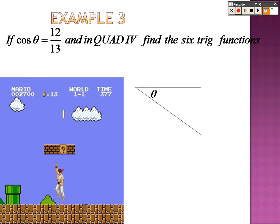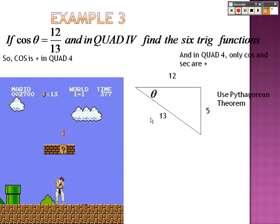Example 3: cosine is 12 over 13, and it's in quad 4, find the 6 trig functions. That's why my triangle goes down this way, because if this was the center, this would be down in 4. So adjacent is 12 over hypotenuse, which is 13. So when we do the Pythagorean theorem to find out that that is 5, it's 12 squared plus b squared equals 13 squared, so it's 169 minus 144, which is 25. When you square root it, you get 5.